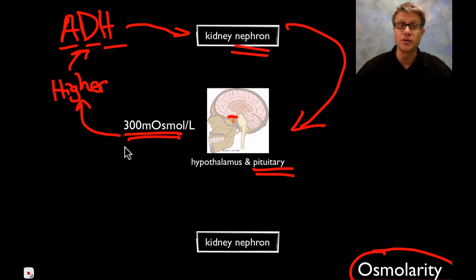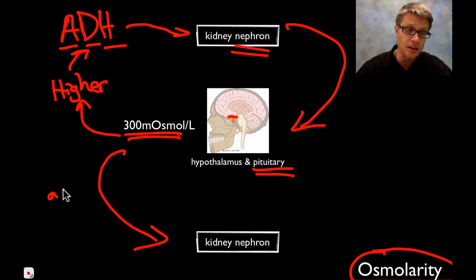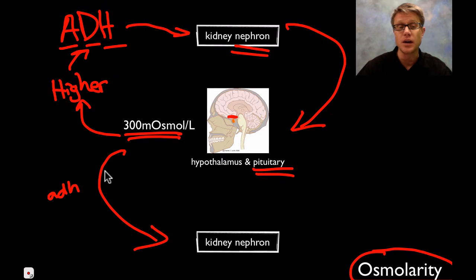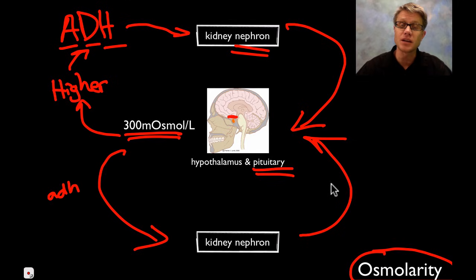We can also have trouble if osmolarity goes too low — too dilute. In that case we simply send less anti-diuretic hormone from the pituitary, lowering the amount of ADH. That allows the kidney to lose more water, which increases the osmolarity back up. And so that's the fourth type of homeostatic loop. All of these mechanisms are helping our body maintain that internal stable environment, and I hope that's all helpful.